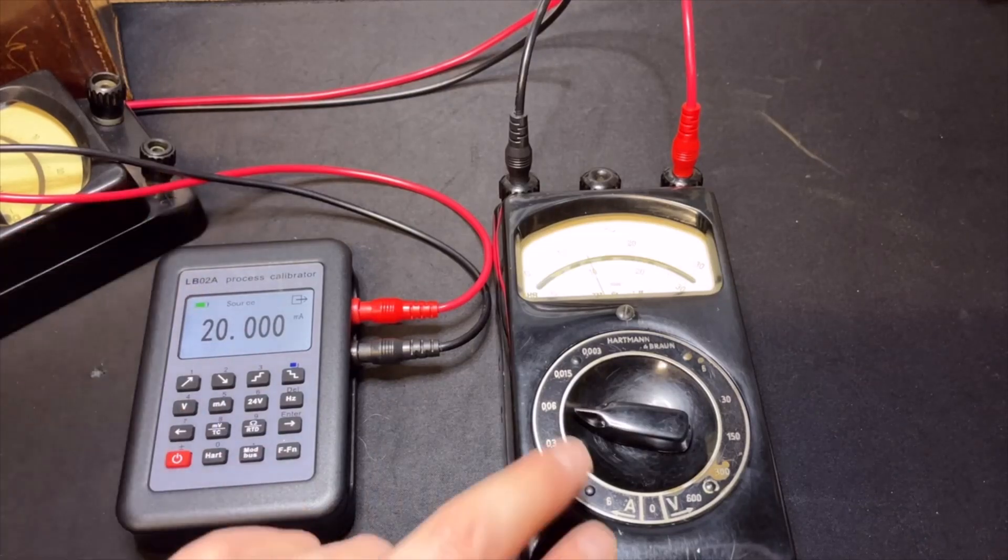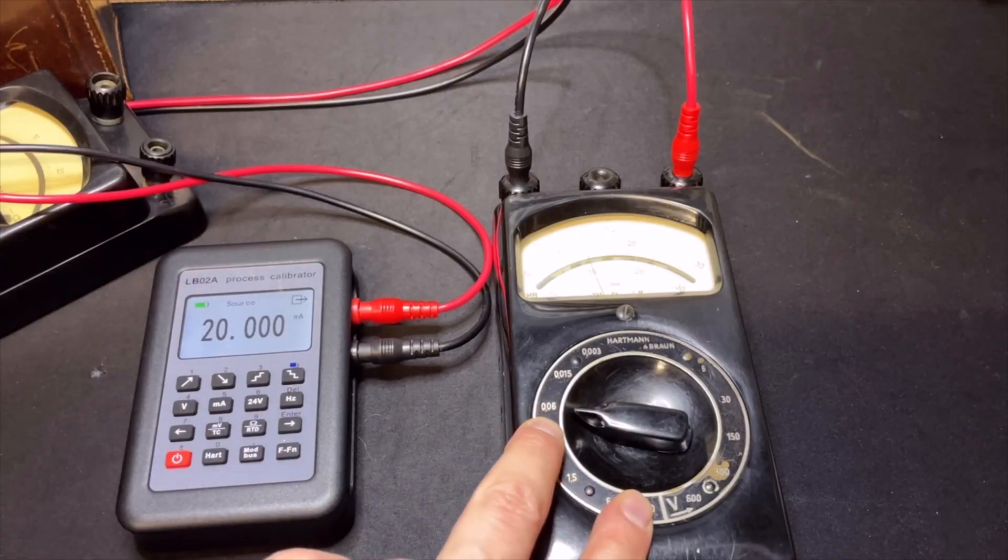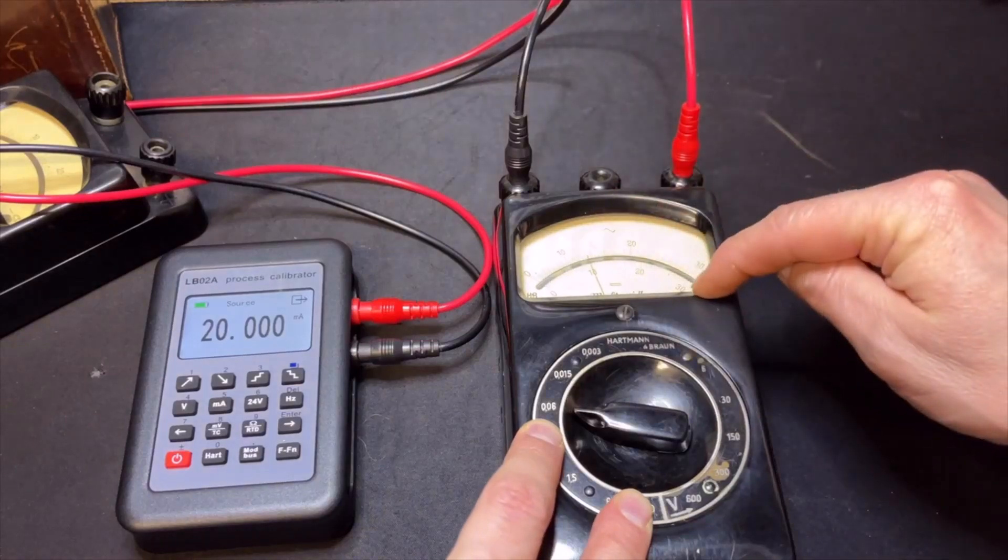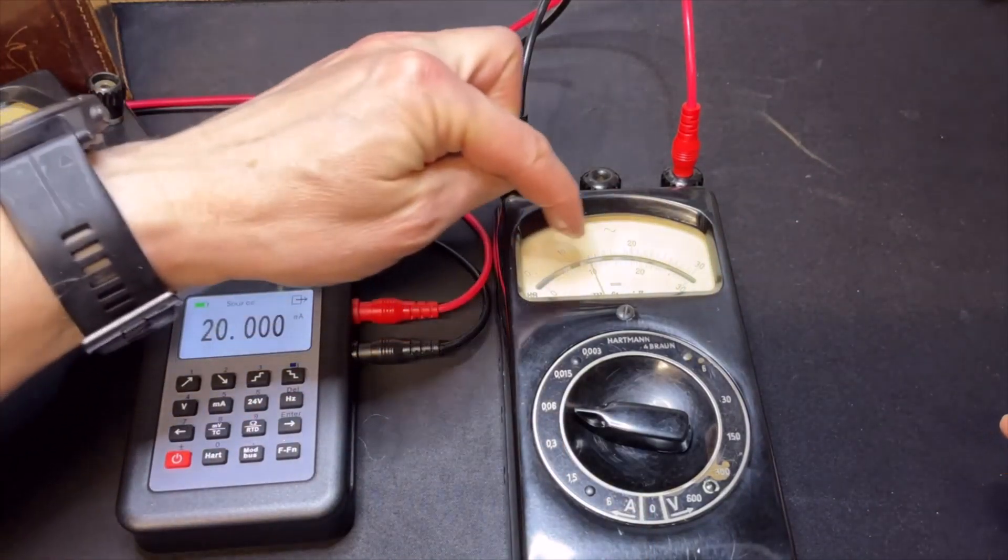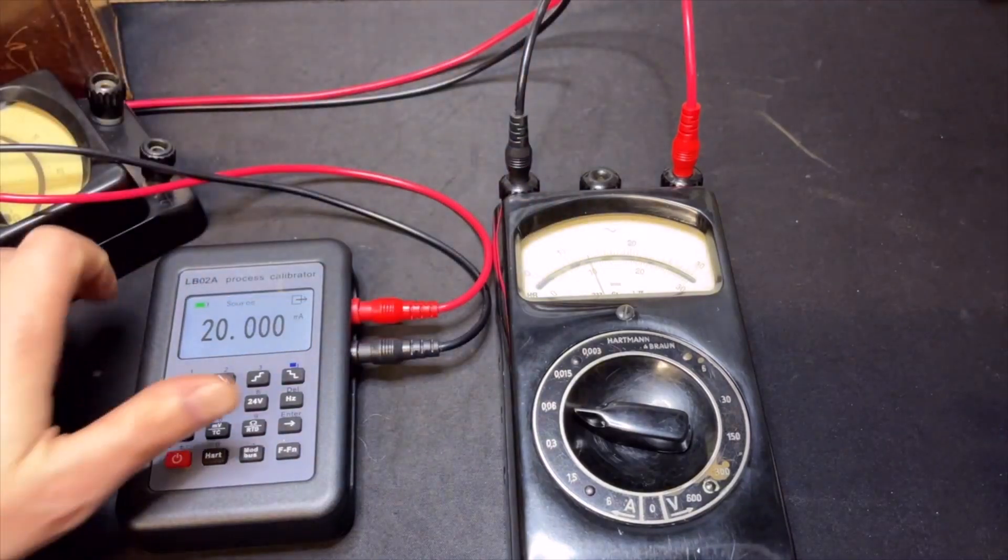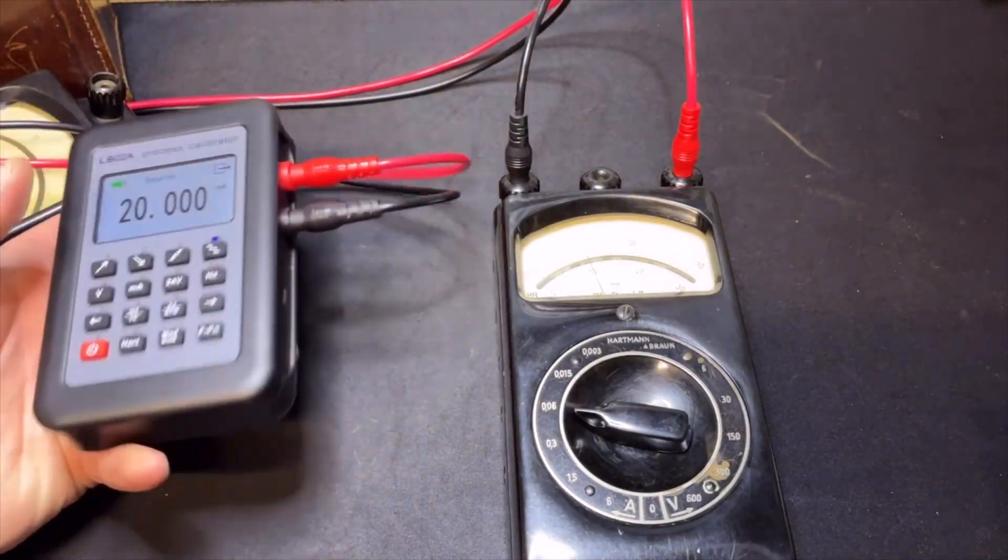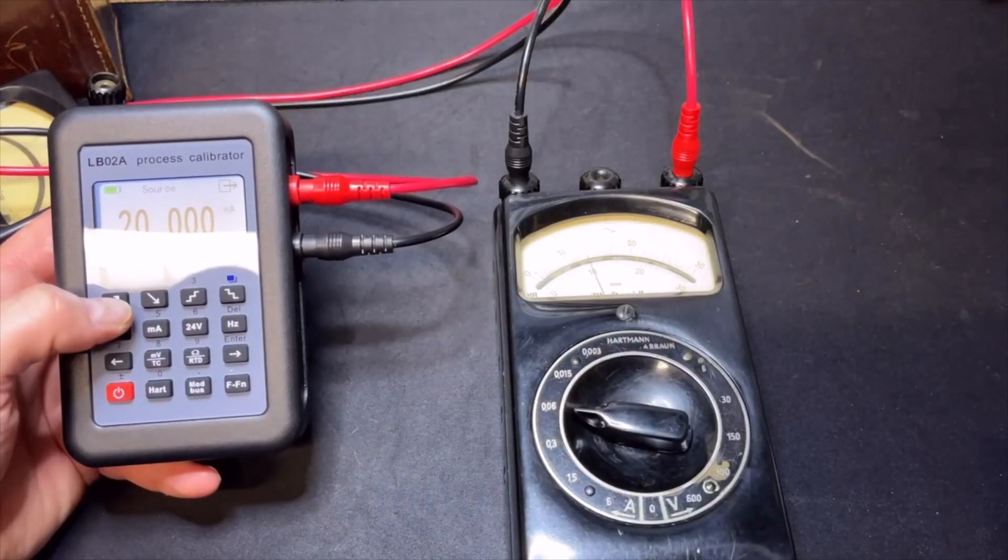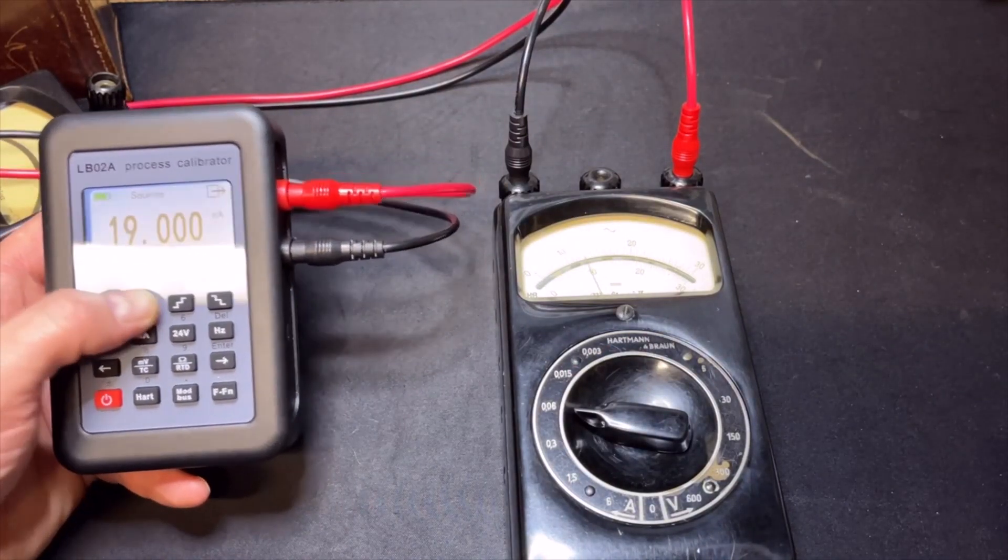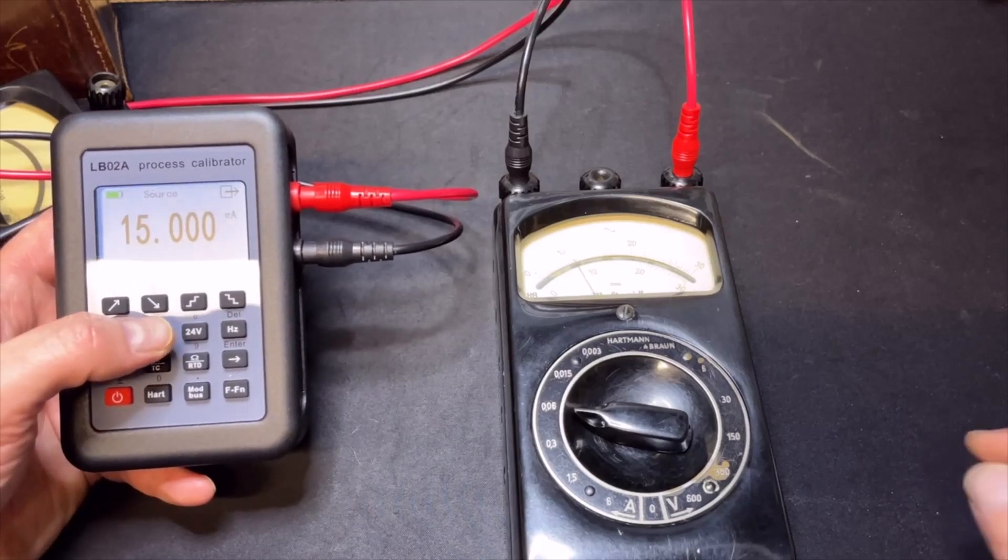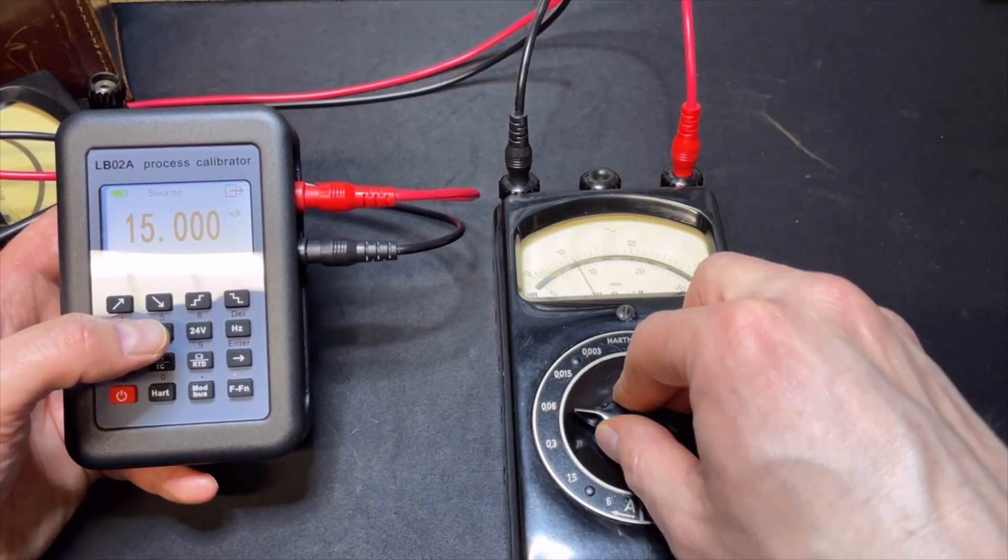And also here the current is still working. This is 60 millis, so full scale. It is now at 30, so if I have 20 it should go to 10, and it goes to 10 exactly. And we can do 1.5, 15 millis. 15 millis, so this should be full scale I think. Yes.